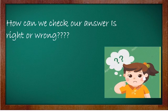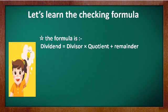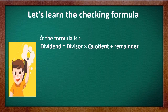Now we need to check our answer — is it right or wrong? There is a formula called the checking formula of division. We need to learn this formula: Dividend = Divisor × Quotient + Remainder. You need to learn this formula very well.